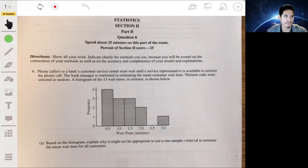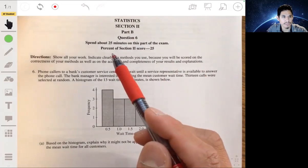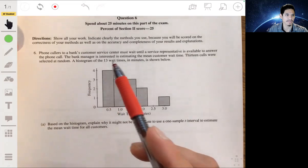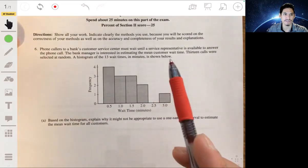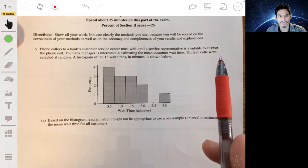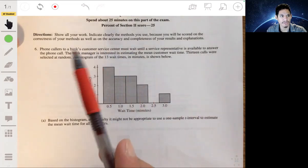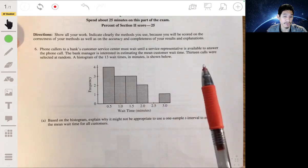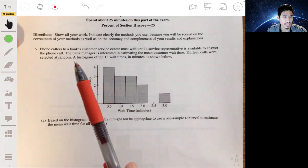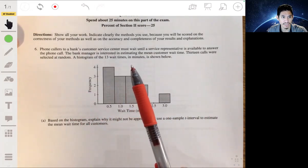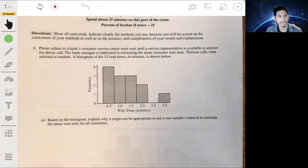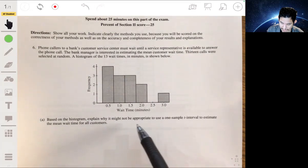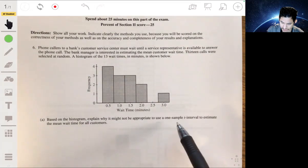All right, so free response question six. We have that phone callers to the bank's customer service center must wait until a service representative is available to answer the phone call. The bank manager is interested in estimating the mean customer wait time. Thirteen calls were selected at random and a histogram of the 13 wait times in minutes is shown below.